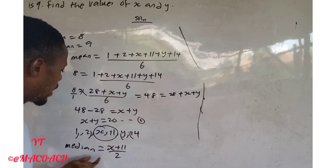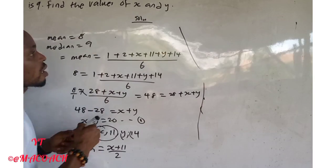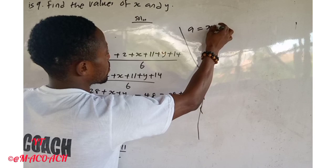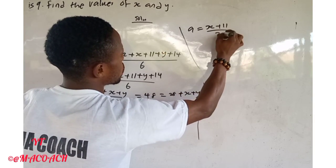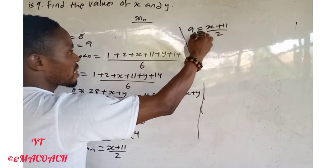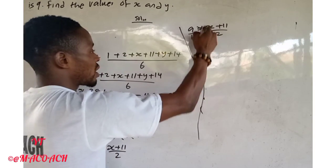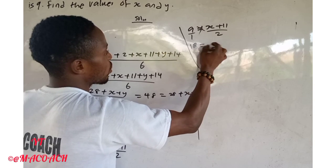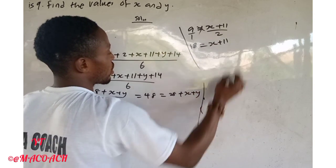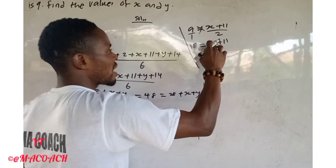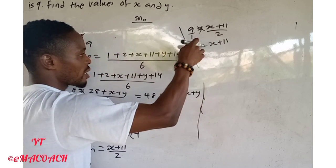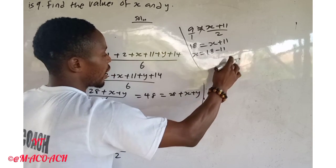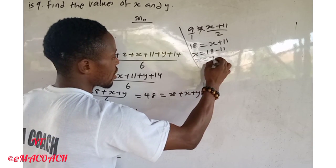The median is given as nine, so: 9 = (s + 11) / 2. Multiply both sides by 2: 18 = s + 11. Taking 11 to the other side: s = 18 − 11 = 7. So the value of s is 7.